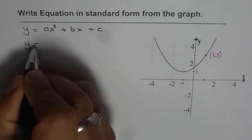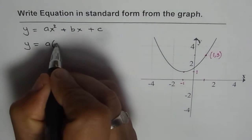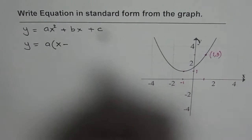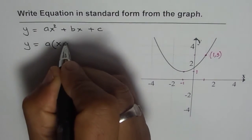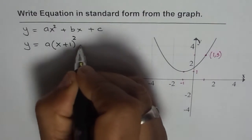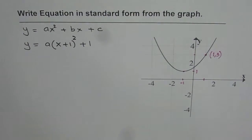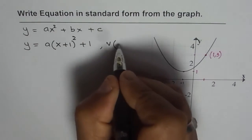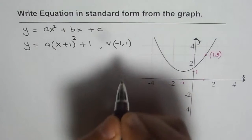So we can write this as y equals a times (x minus the x coordinate of the vertex which is -1). So it becomes (x + 1) whole square, and the y coordinate is +1. So that gives us the equation in vertex form since the vertex is at (-1, 1).